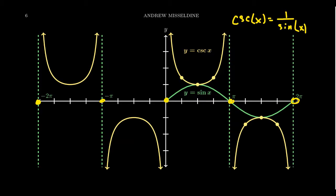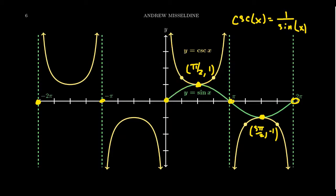Whenever sine has a maximum, cosecant will kiss it at that location — for example, at (π/2, 1). Kissing also occurs whenever sine has a minimum, such as at (3π/2, −1). When sine shows concave downward curvature, cosecant will have an upward bucket; when sine curves upward with a concave up shape, cosecant will have a downward bucket going in the opposite direction.